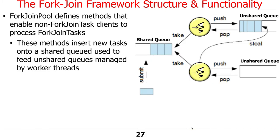Here's what things look like under the hood for non-ForkJoinTask clients. If someone calls submit, invoke, or execute, they put their ForkJoinTask into what's called a shared queue. There's a pool of threads — the ForkJoinPool — and those threads pull ForkJoinTasks from the shared queue and process the work on their own unshared queues, though other threads can steal from those queues as we'll see.